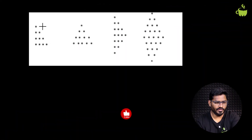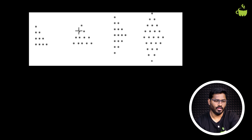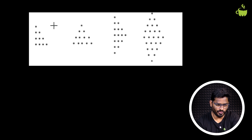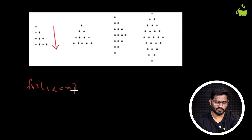Let us understand what is the logic behind solving these pattern problems. You'll be given different star patterns or number patterns to solve. First and foremost, you need to figure out how many number of lines you need to print. So you have to run an outer for loop to iterate from 1 to less than or equal to the number of lines.